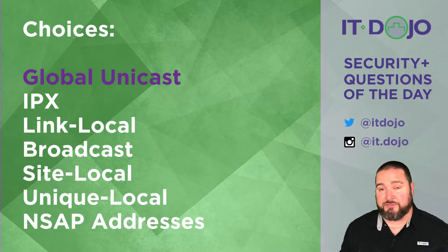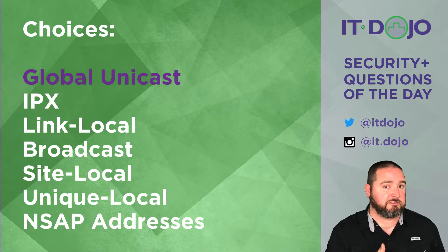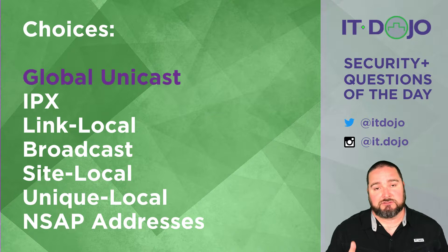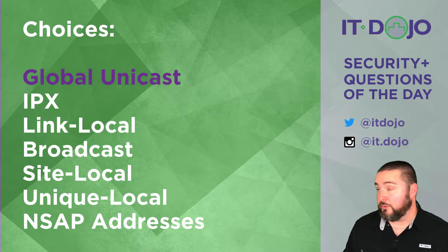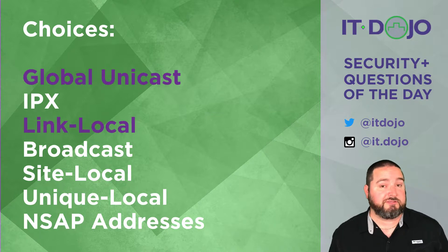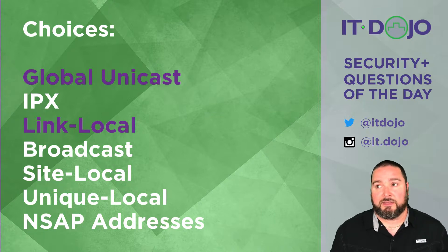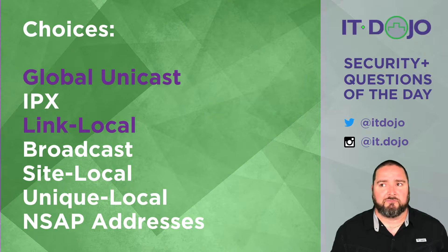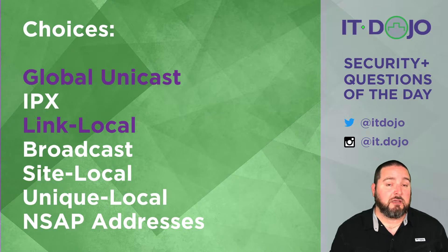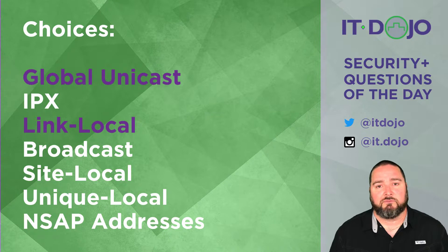The next choice is IPX — no, that's old-school IPX/SPX, not part of IP version 6. The next correct choice is link local IPv6 addresses. These all begin with FE80, though technically they could be FE9, FEA, or FEB. FE80 is a link local IP address; the full prefix is FE80::/10. You will see that a lot because it appears on every single interface that has IPv6 enabled.